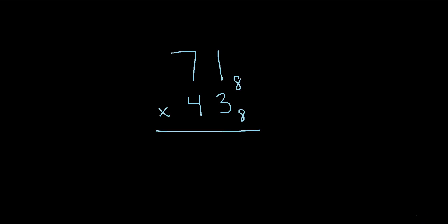In this video, we will talk about how to multiply octal numbers. I have a few examples for us to work through. Let's check out the first one. We have 71 times 43, and I've written a little 8 next to each value to indicate that it is an octal value. So how can we perform this multiplication?